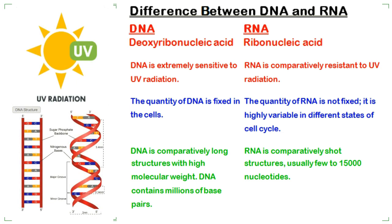DNA is extremely sensitive to UV radiation, while RNA is comparatively resistant to UV radiation. The quantity of DNA is fixed in the cells, while the quantity of RNA is not fixed and is highly variable in different states of the cell cycle.